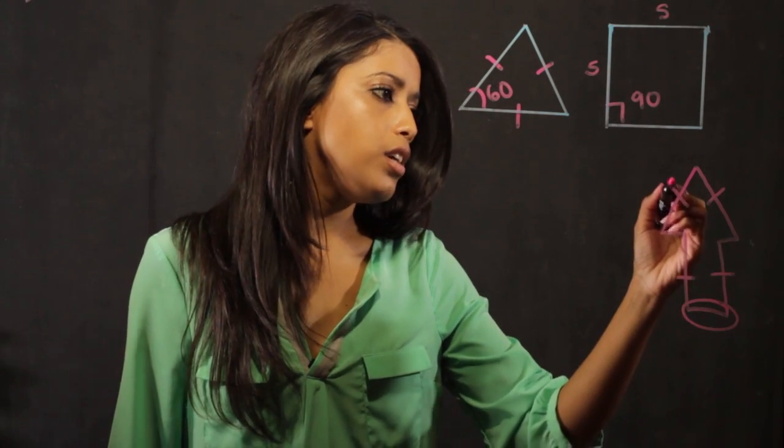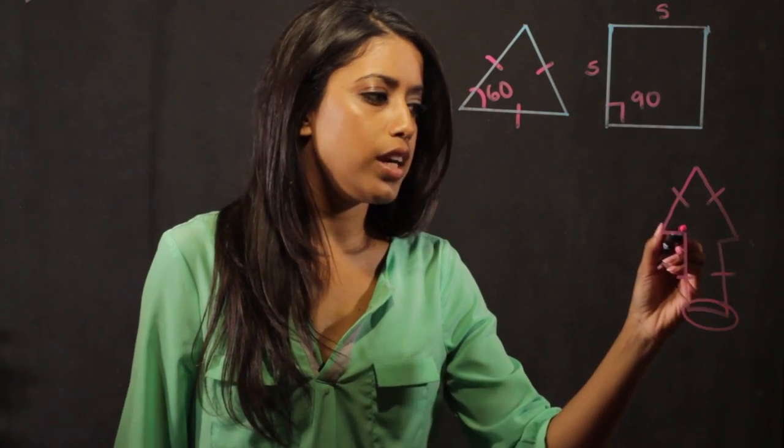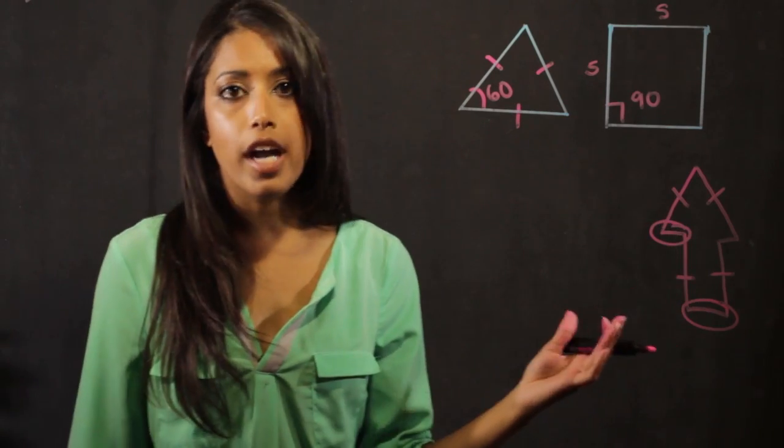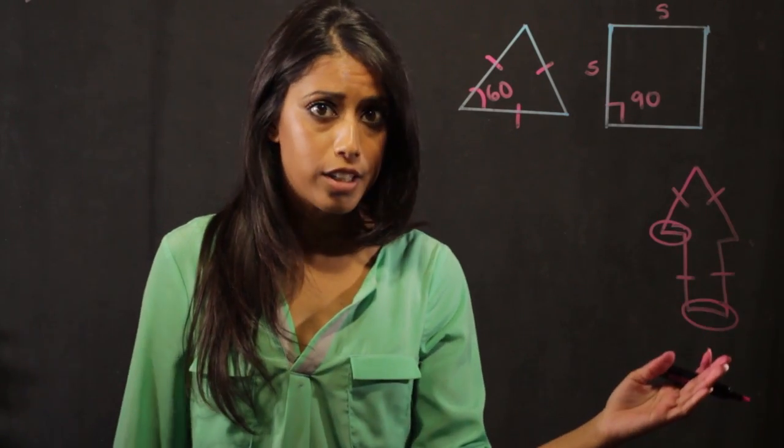But this side here is a lot longer than the bottom side here. And when we look at the triangle, the lengths up here are a lot longer than this length right here, so they don't all match, which means this is an irregular shape.